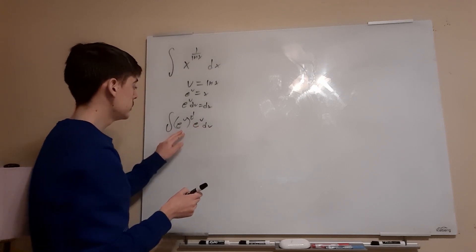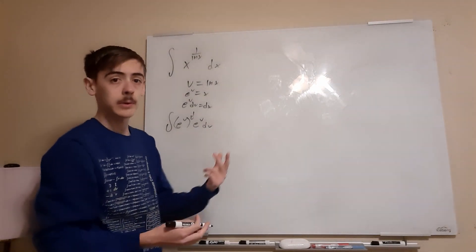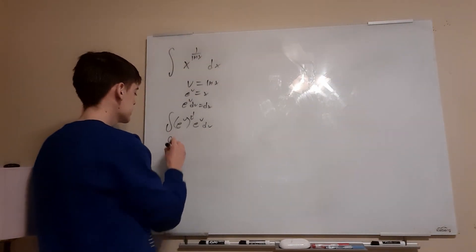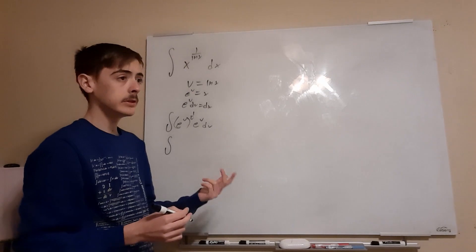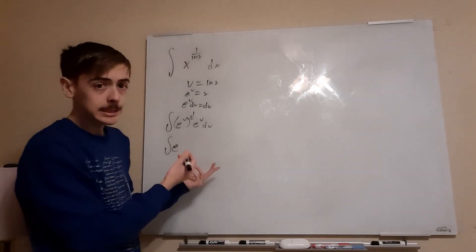Now this first term, e to the u to the power of 1 over u, we could simplify that. Remember, if you have a power to a power, that's just multiplying the exponents. So we will end up having e to the u times 1 over u, which actually just simplifies to e to the first power, or just e.